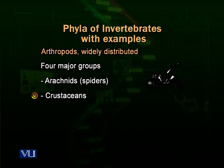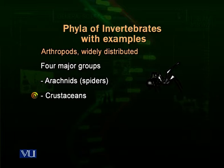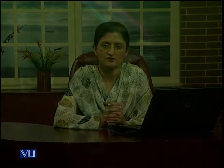Crustaceans are very important because they are present in lakes, freshwater, and mostly marine waters. They make up the very important zooplankton component of food chains and food webs, acting as the link between producers and the larger animal consumers of water ecosystems.